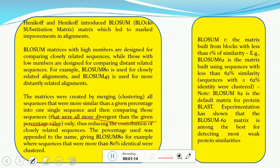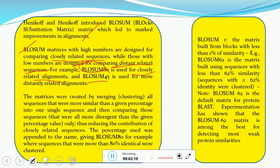Hennikoff and Hennikoff introduced BLOSUM matrices which led to marked improvement in alignments. BLOSUM matrices with high numbers are designed for comparing closely related sequences, while those with low numbers are for comparing distantly related sequences. For example, BLOSUM 80 is used for closely related alignments and BLOSUM 40 is used for more distantly related alignments.